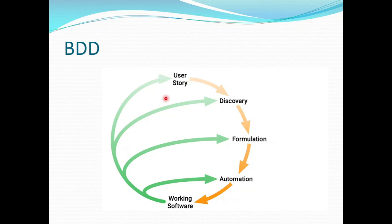In BDD, first what we get is a user story. Then it goes to the first phase, which is the Discovery phase, where we have the requirements as a user story and then all the teams — mainly the three amigos, which are QA, Dev, and Product Owner — brainstorm about the requirement and talk about the change to the system through examples of new functionality to explore and discover. Finally, all come to agreement on what the expected output is, which is known as Definition of Done, or DOD.